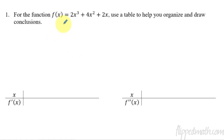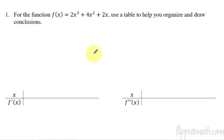So to start us off, I've got this function. We're going to take a table of values for f prime and f double prime and organize it to help us tell what's going on about this function f. Go ahead and take the first derivative, take the second derivative, set them equal to zero and solve. Let's find those critical points and the possible points of inflection. Go ahead and do that now, and pause the video so you don't see the answer appear until after you've done it yourself.